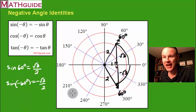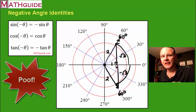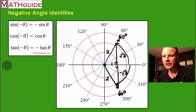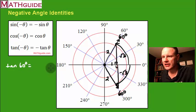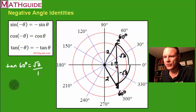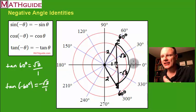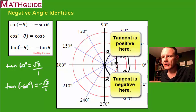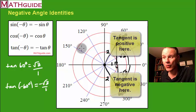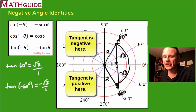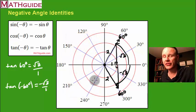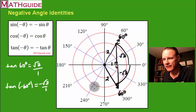Now let's talk about what happens for tangent. If you take the tangent of 60 degrees, you get opposite over adjacent, which is square root of 3. If you take the tangent of negative 60 degrees, you get negative square root of 3 over 1. Again, they're opposites. Comparing quadrant one with quadrant four, they're opposites for tangent. Likewise, they're opposite when comparing angles in quadrant two with angles in quadrant three — these are mirror images whether you go in a positive or negative angle direction.